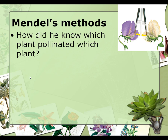A little bit about Mendel's method: how did he know which plant pollinated which plant? He actually went in and removed the anthers from every flower of every plant. Not only did he remove all of the anthers where the pollen is made, he kept track of which anthers came from which plants. He would then take a paintbrush or something similar and pollinate each flower individually by hand, so that he knew there was no chance that a bee, wind, or a butterfly could pollinate plants with pollen he did not intend.